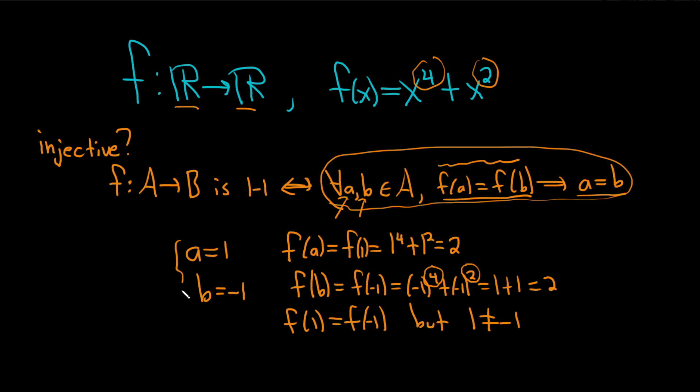So we found just two numbers where this definition is completely violated. And that's all you need, right? So all you have to do is find one example where it fails, and then we know the answer is not injective or not one to one.